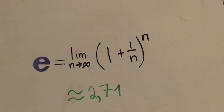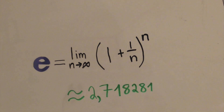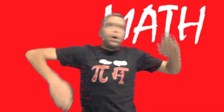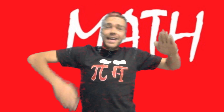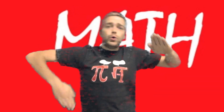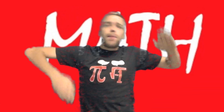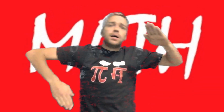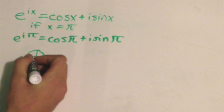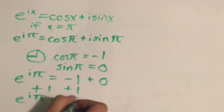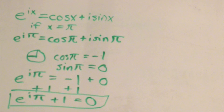2.718281828459045235360287 — 4-ish. E to the i pi plus 1 is equal to 0.